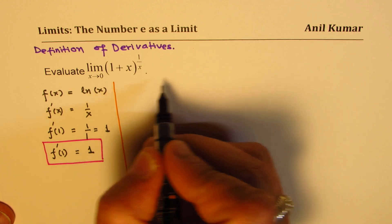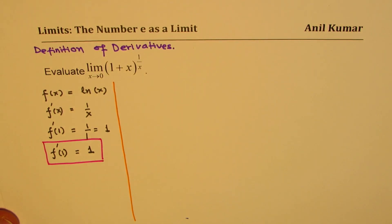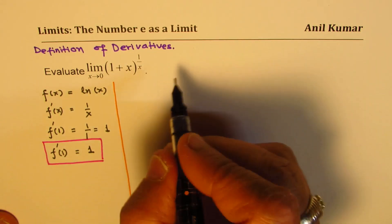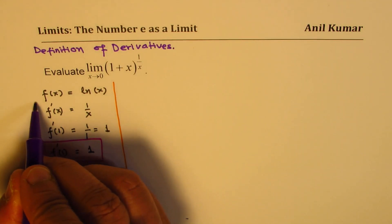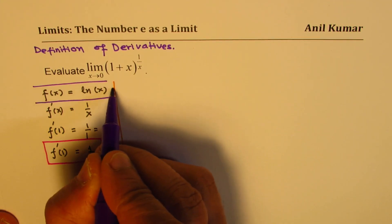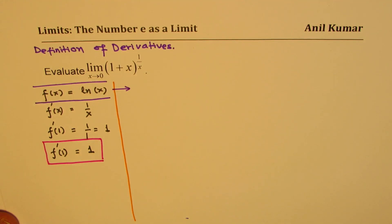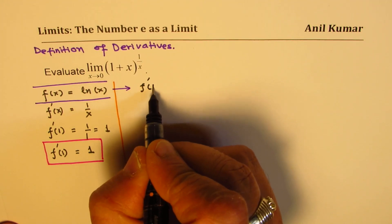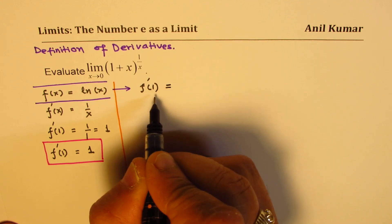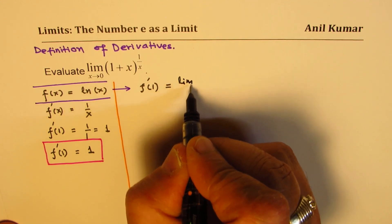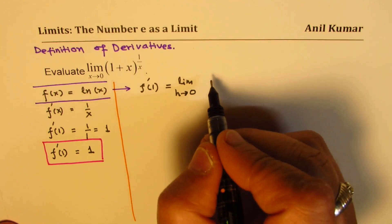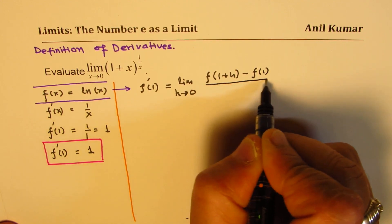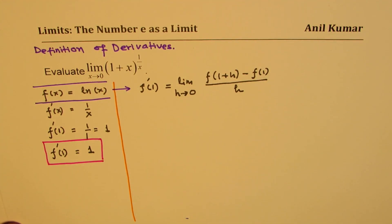We are going to use this derivative to find the limit of the given function. The basic definition of derivatives using limits is the slope of the tangent. For the given function at x equals 1, the derivative by definition is: limit h approaches 0 of [f(1+h) minus f(1)] over h. This is the definition of derivatives.